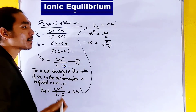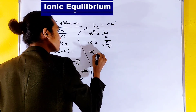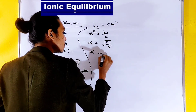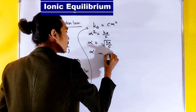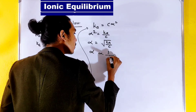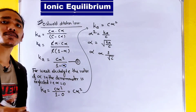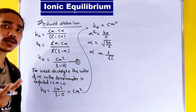So alpha is equal to the square root of Ka over C. This means alpha is directly proportional to 1 divided by the square root of C, since Ka is a constant quantity.